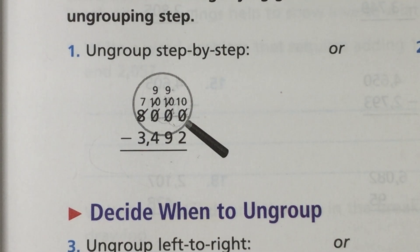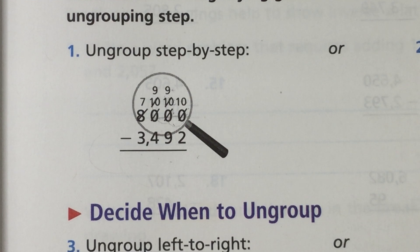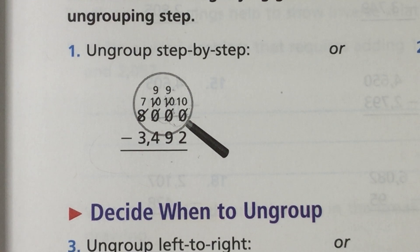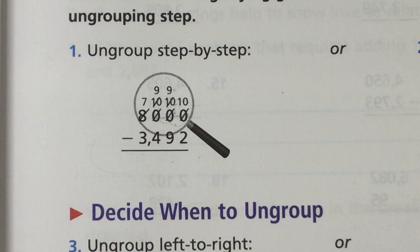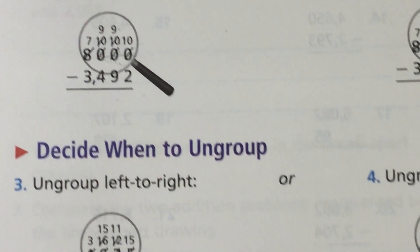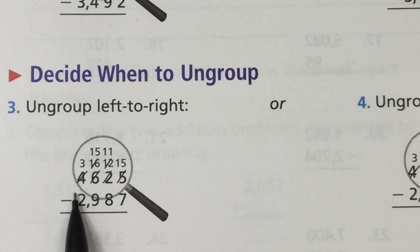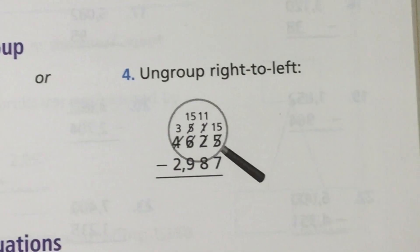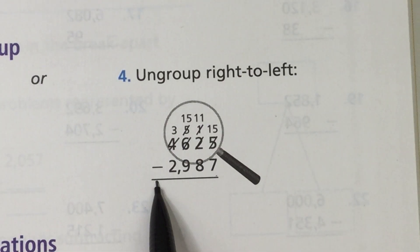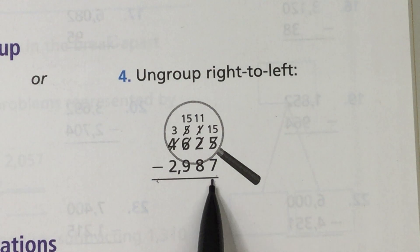Okay there is a way that we are going to learn to ungroup and it is going to be from right to left. So you'll see they have an example of left to right here. We're gonna learn from right to left. We're always gonna start in the ones place because that's what we're used to doing when we're doing other types of problems like this.